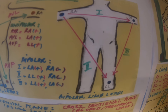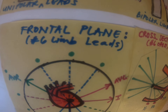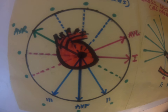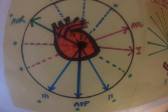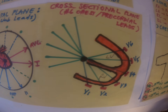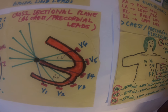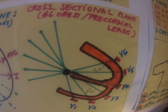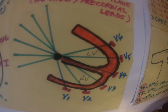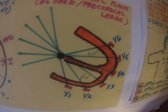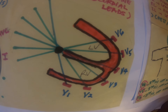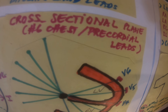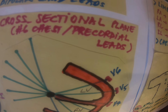These limb leads are utilized by the frontal plane to view the heart. If you want to check the deeper part of the heart, you have to utilize the cross-sectional plane view using your chest leads from V1 to V6. The other name for chest leads is precordial leads.